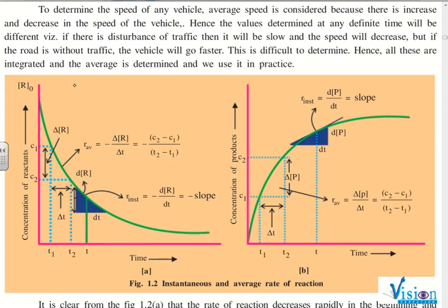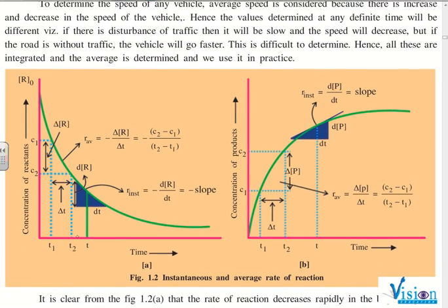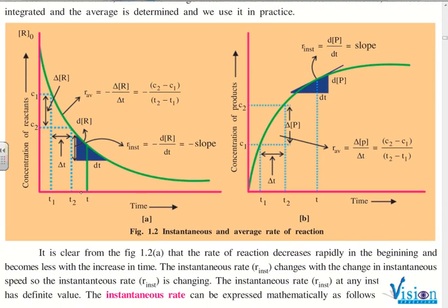We will continue. Suppose now, if you want to study at a given instant, if you want to find out instantaneous rate, this is the graph which we draw here. As we know, reactant concentration keeps on decreasing as time progresses.